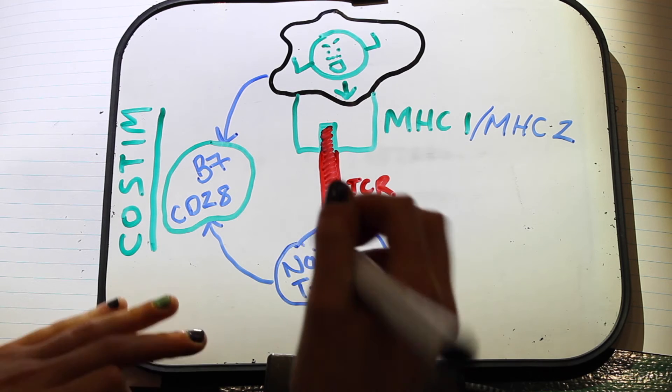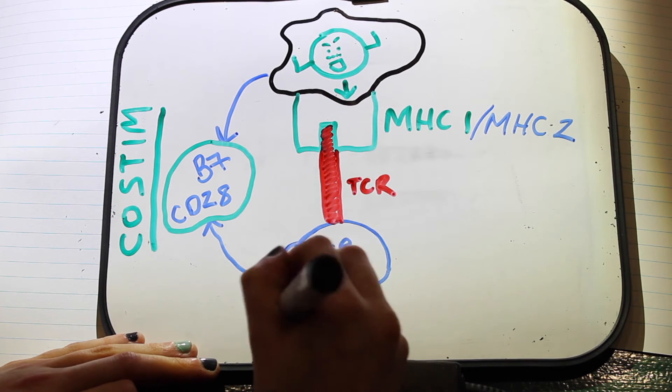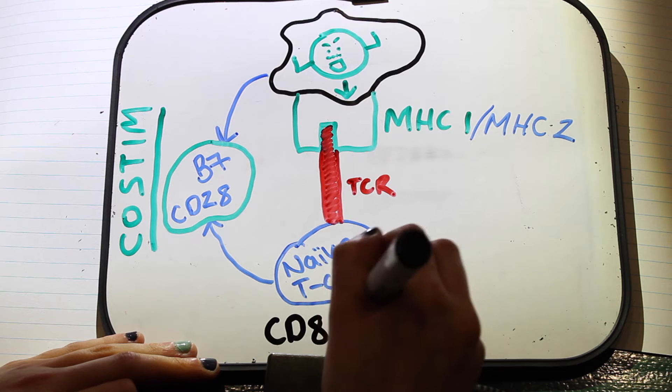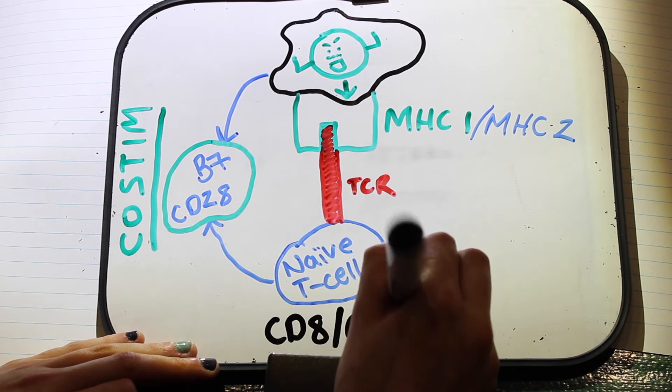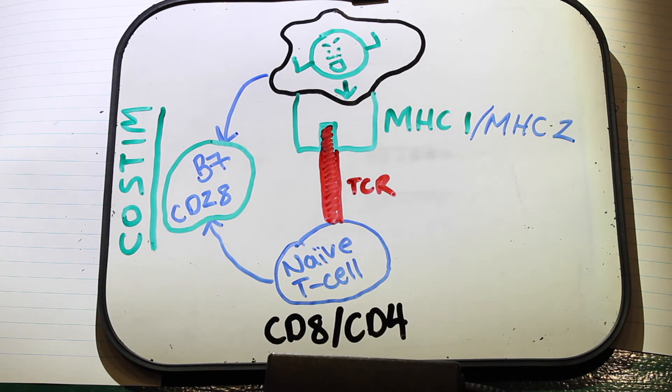These interactions lead to the production of NF-kappa-B and AP-1 within the naive T-cell. These transcription factors, along with NF-AT, will go on to be activated by the second necessary interaction, co-stimulatory signaling.